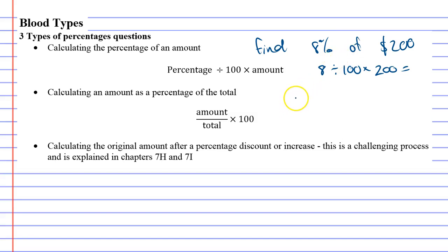The next one, a little trickier, is calculating an amount as a percentage of the total. And probably a really simple example of this is if you do a test and let's say in your test you got 17 out of 20 marks. So 20 is the total amount of marks and 17 is what you got. So what you got correct.